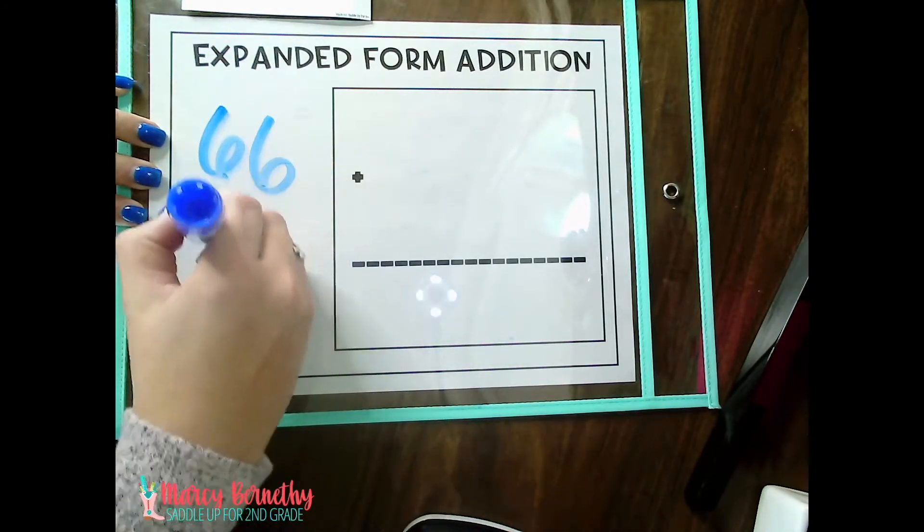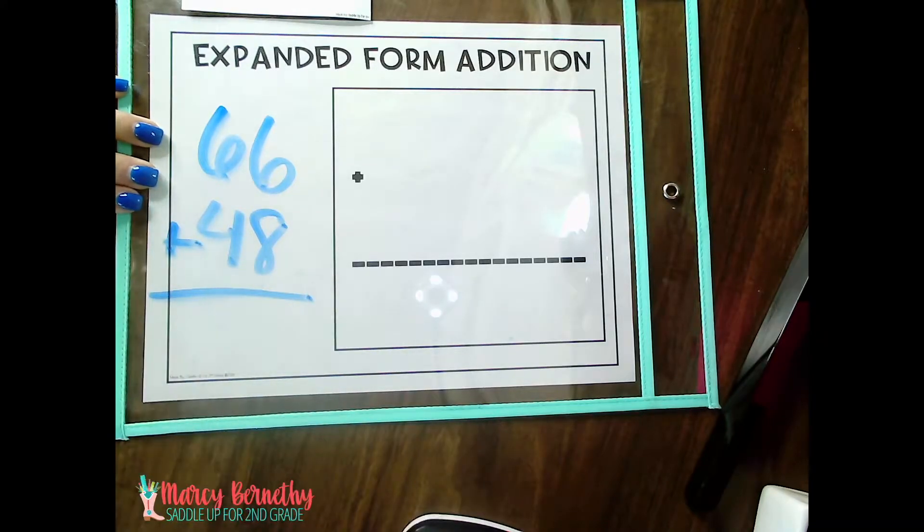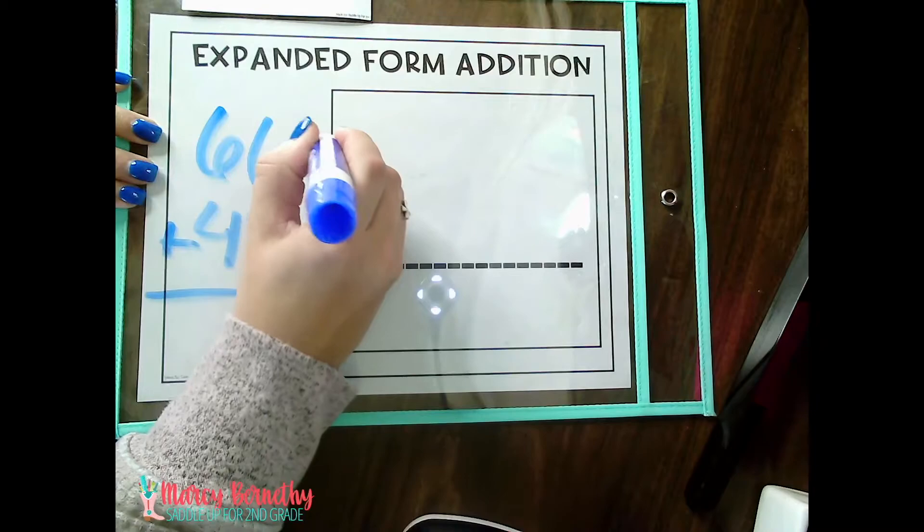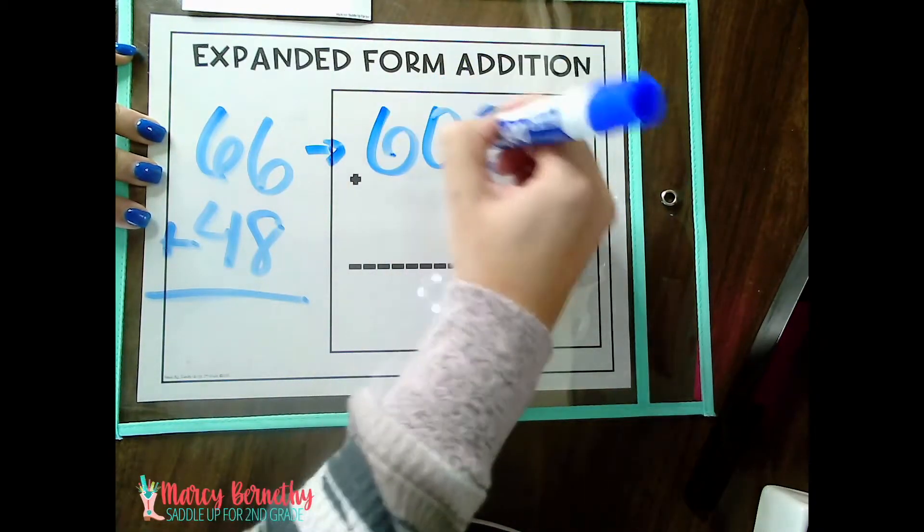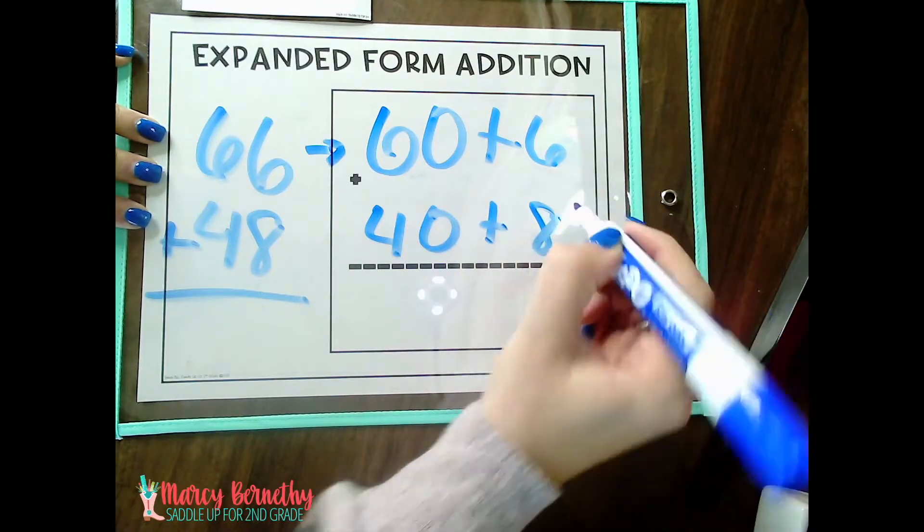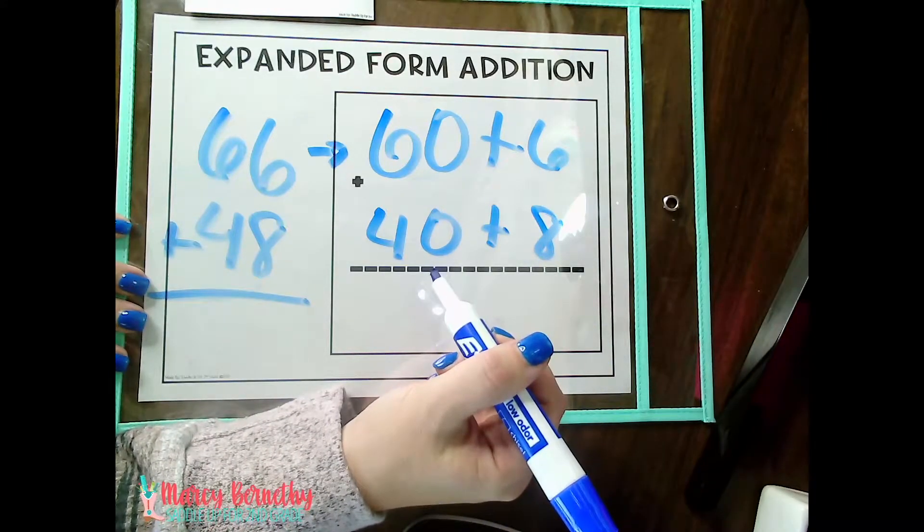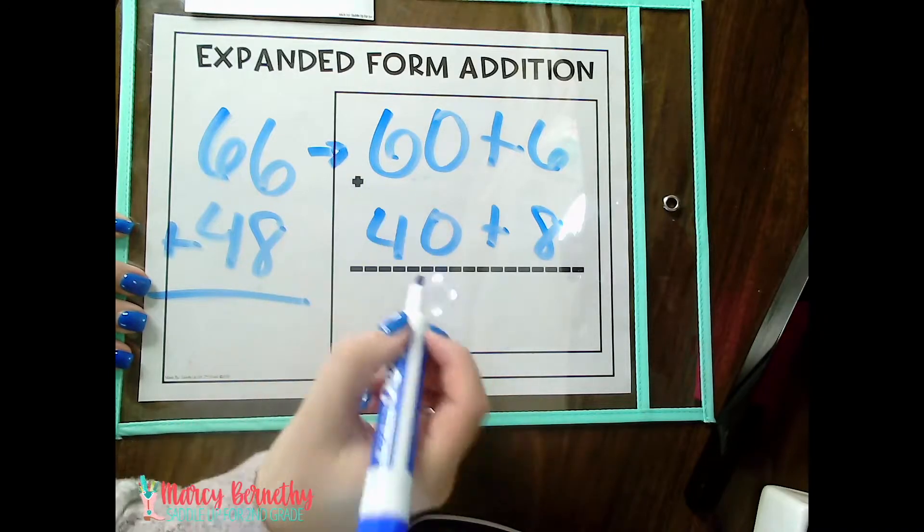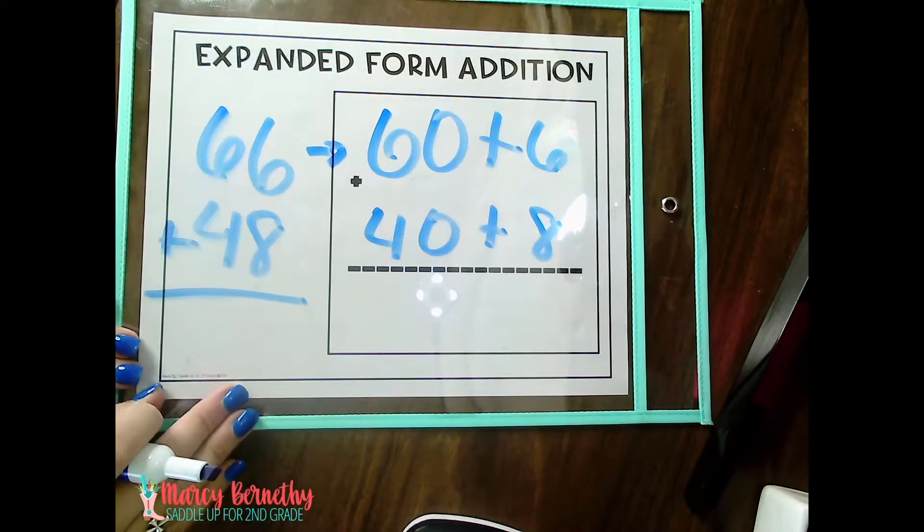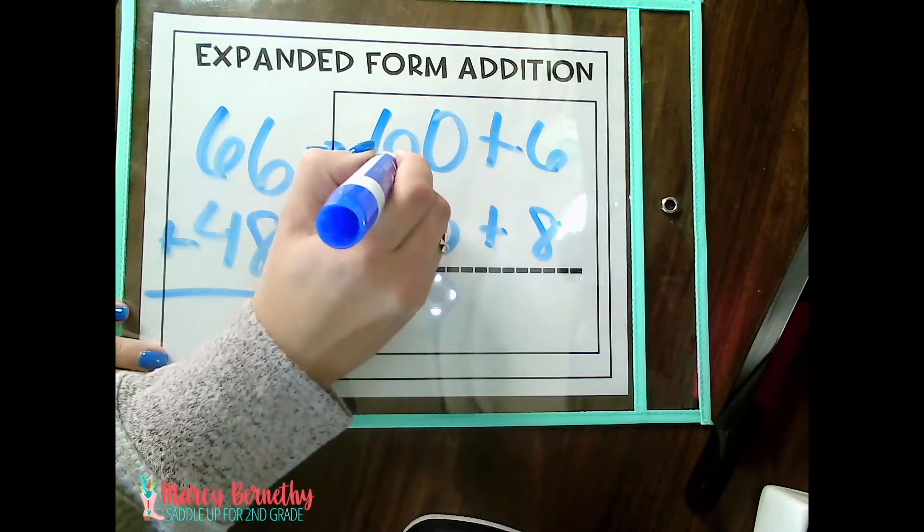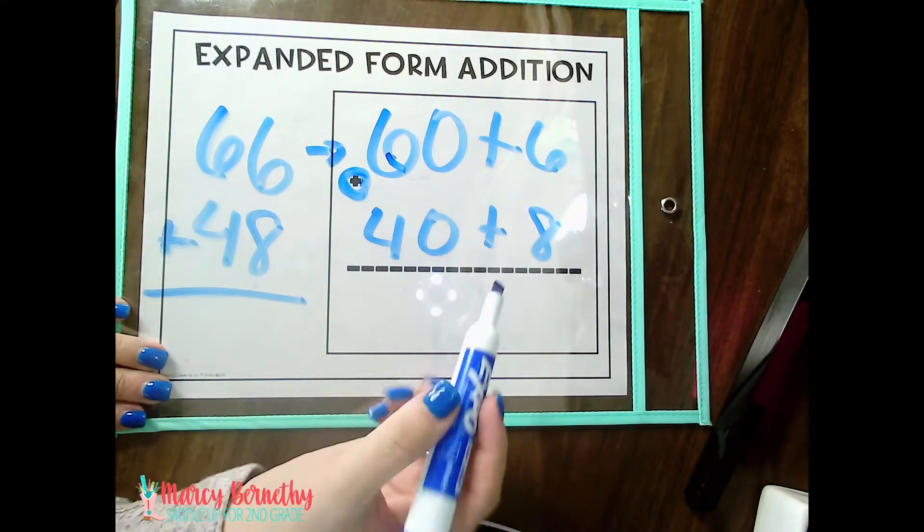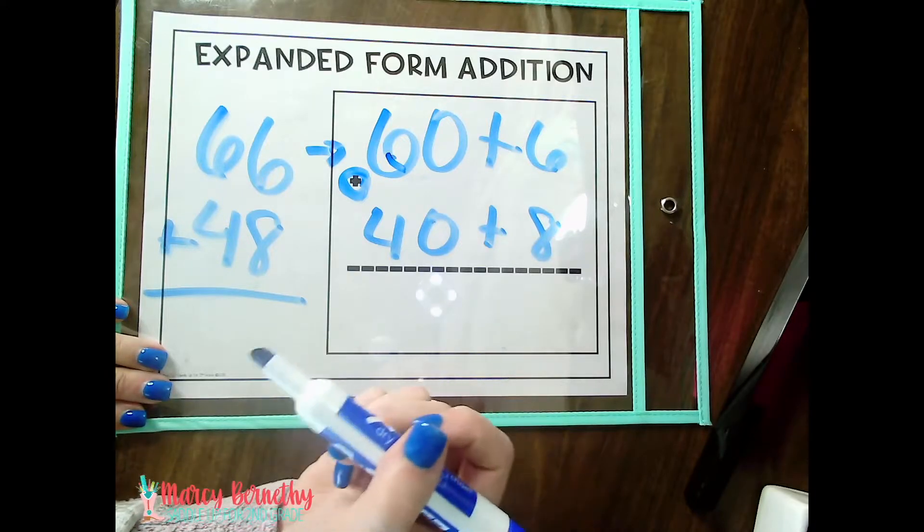So I'm going to write the problem right here. I'm going to write 66 plus 48. And what you want to have kids do is use their place value knowledge to expand both addends. So they're going to expand the number 66, which would be 60 plus 6. Then they're going to expand the number 40 plus 8. So once they have their two numbers expanded, then they are actually going to write a plus sign and draw their equation bar. Now what I have kids do, and I start this from the beginning because you can use this strategy for subtraction with regrouping as well, I actually have them circle this plus sign right here to let them know that they are going to be adding these numbers rather than subtracting.